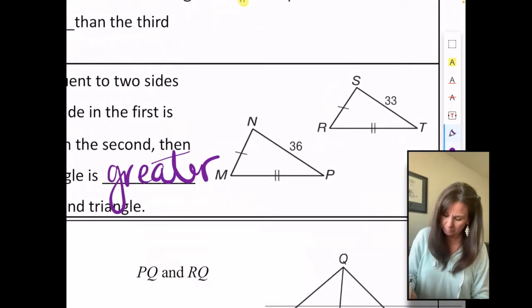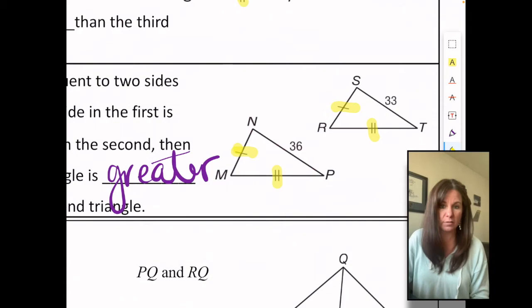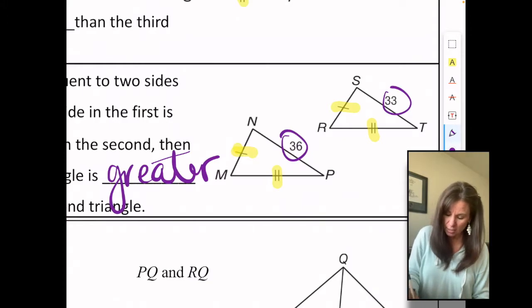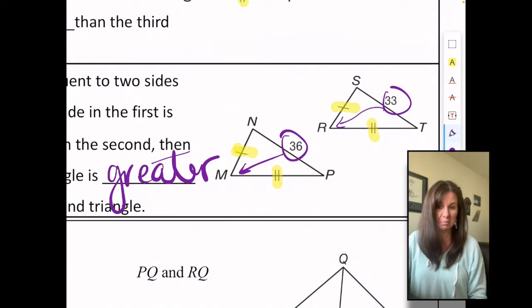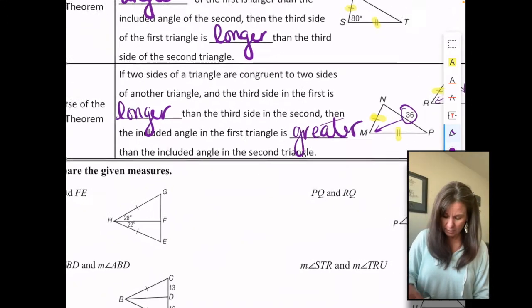So if we look at these two triangles, we've got the congruent markings. So the two sides of the two triangles are congruent. 36 is bigger than 33, so the angle across from 36 is bigger than the angle across from 33. So let's put this into practice and see where it takes us.